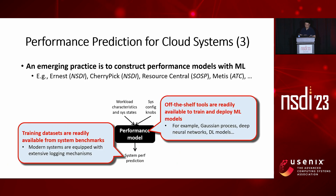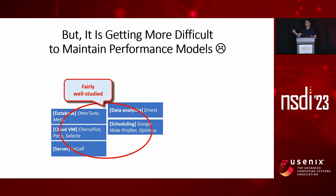One emerging practice is to apply machine learning techniques to performance modeling. There are two reasons behind it. First, training datasets are readily available from running system benchmarks. Second, there are many off-the-shelf machine learning tools that can help us to train and deploy large models. Over the years, we have seen a lot of efforts demonstrate the feasibility and potential of applying machine learning to performance modeling, with system scenarios ranging from databases to cloud VMs to schedulers and so on.